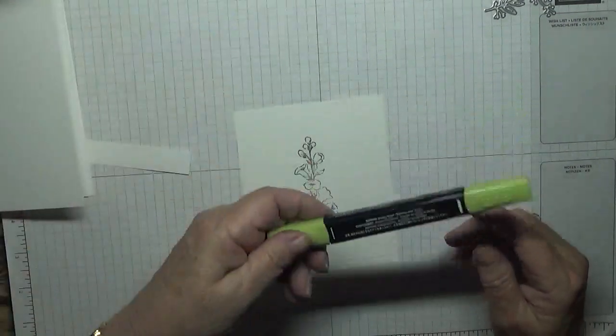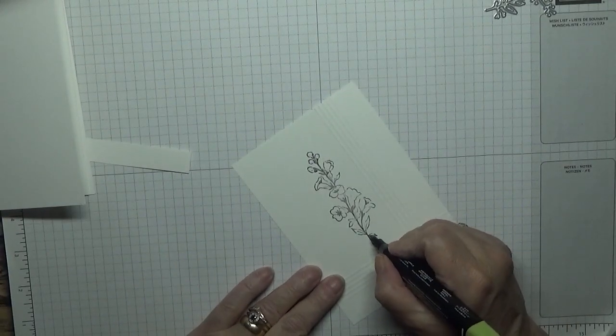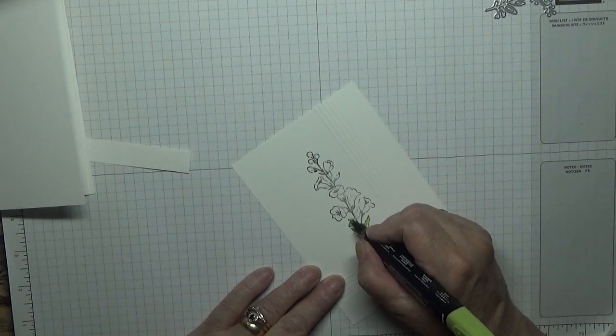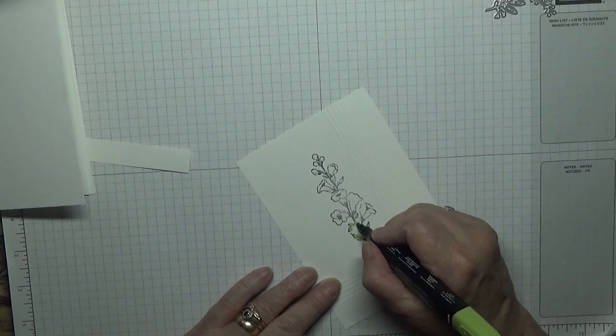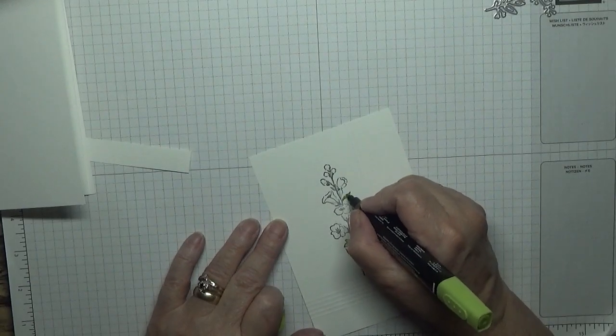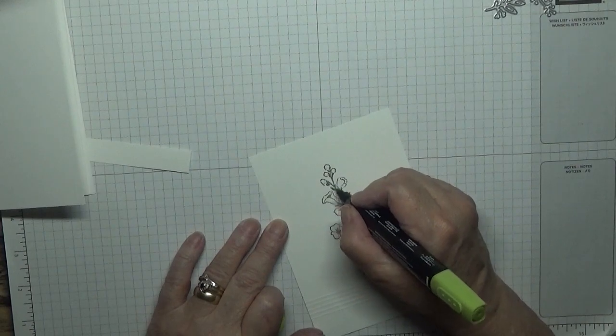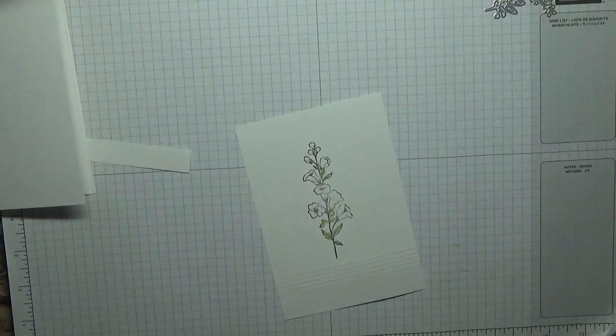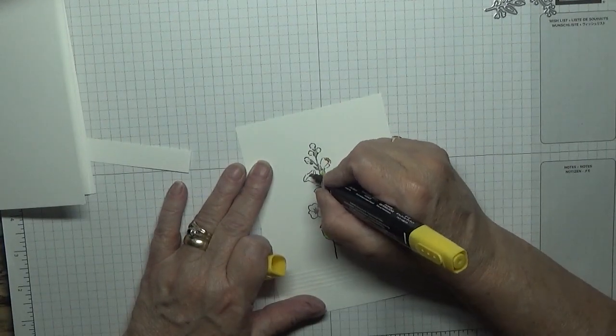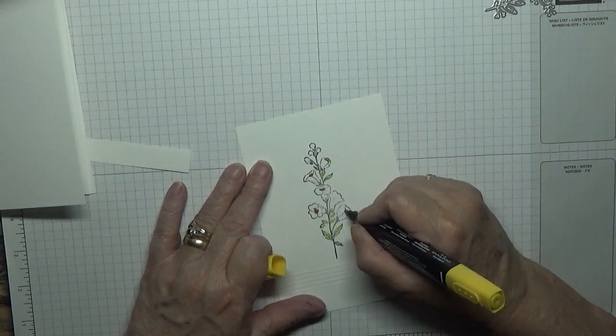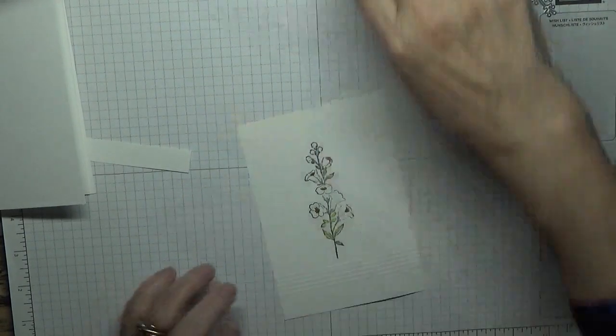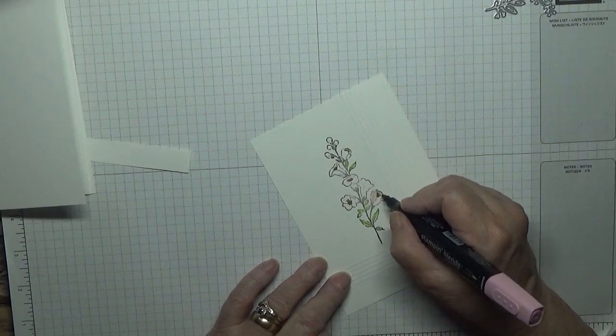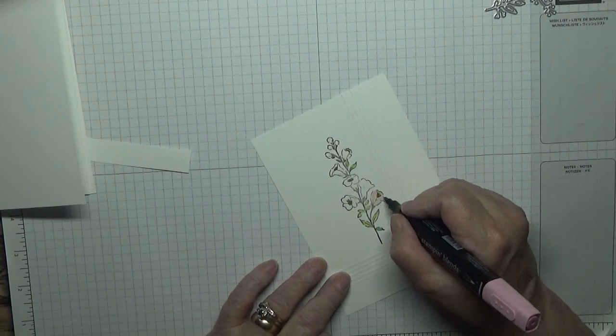I'm going to color this in. I've got Granny Apple Green Light just to do the leaves, Daffodil Delight Dark to do the center of the flowers, and then just Pink. It should be Pink Pirouette, but I re-inked it with Blushing Bride.